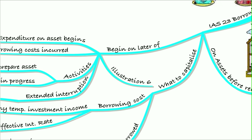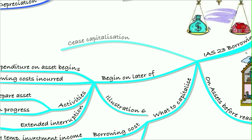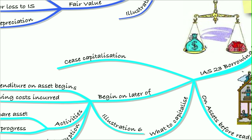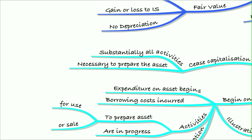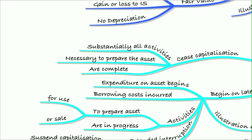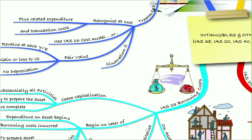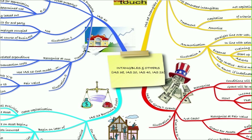We did a detailed illustration of this in illustration six. We cease capitalization when substantially all of the activities necessary to prepare the asset are complete — i.e., when we've finished building the asset. The key things were: we can capitalize our borrowing costs, and we need to net off any temporary investment income. So that was a recap of our lecture on intangible assets and others.